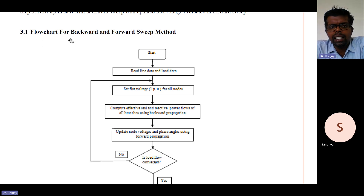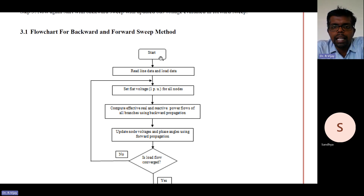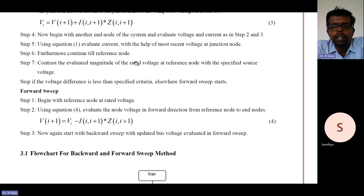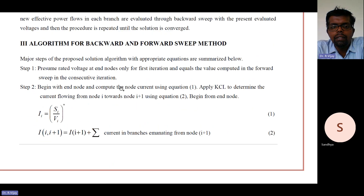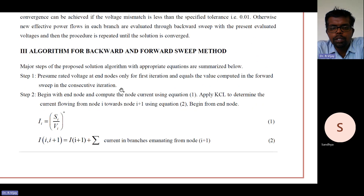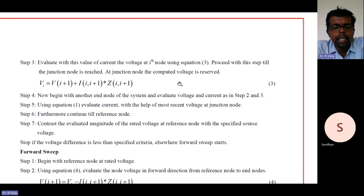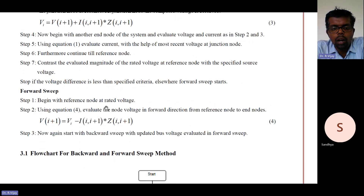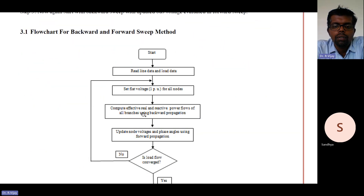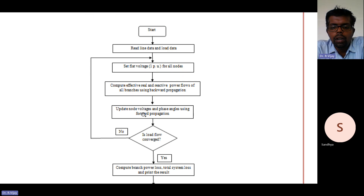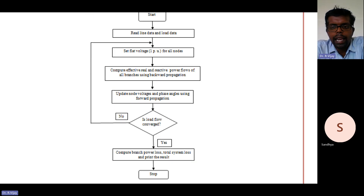From an exam perspective, in two-mark questions they may ask you to draw the flowchart of the backward and forward sweep method. The combined algorithm may be asked as a five-mark question since it is relatively simple. If you write both the algorithm and the flowchart, you can get the full five marks or eight marks, as it is sometimes asked as an eight-mark question.